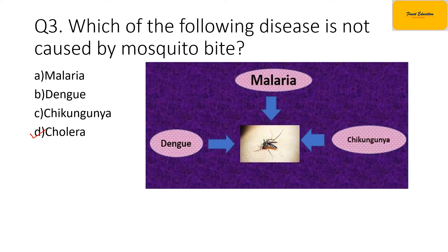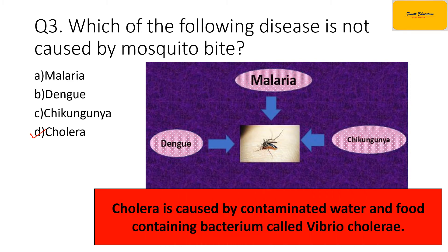As you can see in the image, dengue, malaria, and chikungunya are caused by mosquito bite. On the other hand, cholera is caused by contaminated water and food containing bacteria called Vibrio cholerae. So cholera occurs when you consume food or water containing the bacteria Vibrio cholerae.